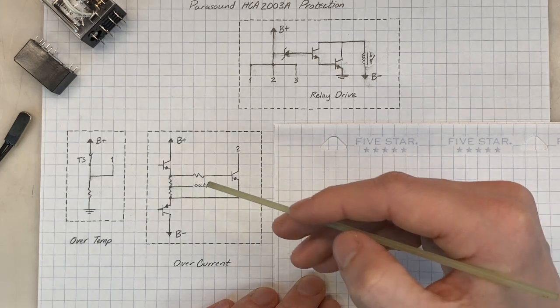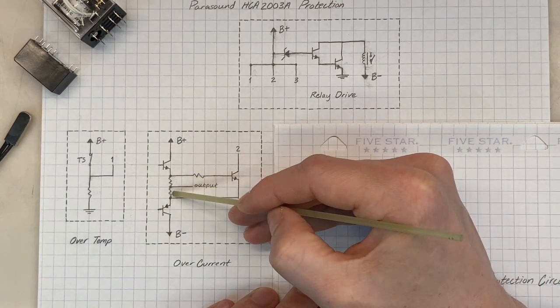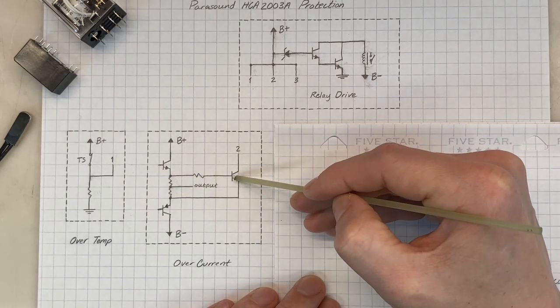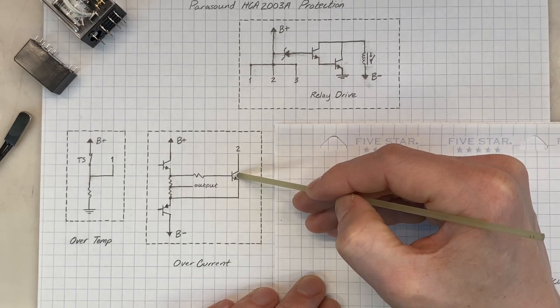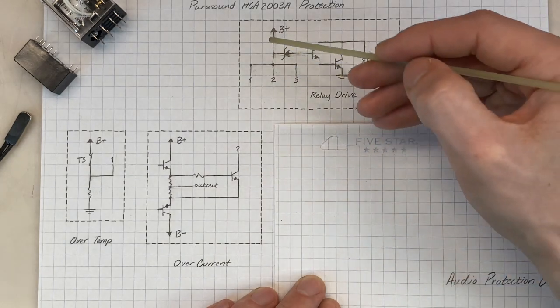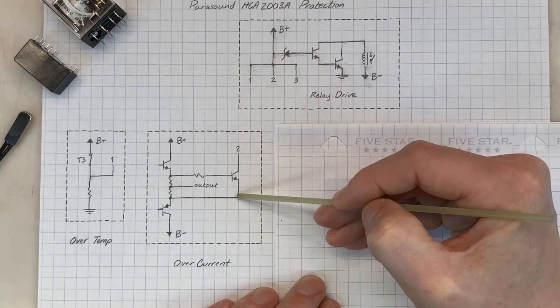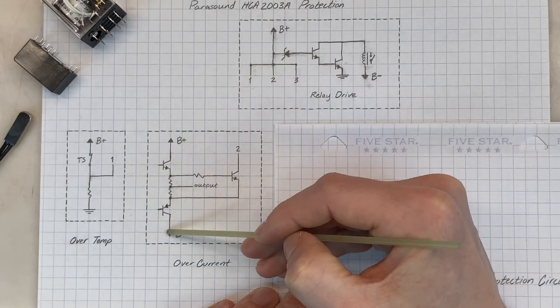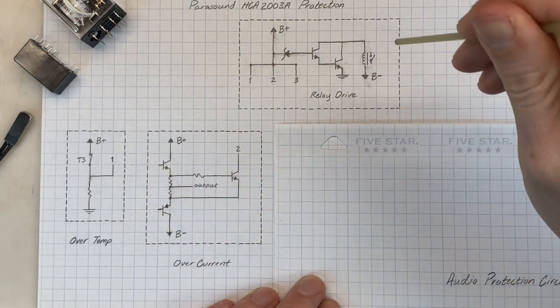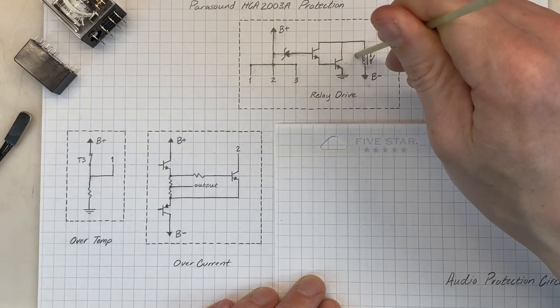But in a fault condition, when the current through these resistors is high enough, the voltage across this transistor will be high enough to turn it on. That will allow current to flow from B-plus through node 2, through this transistor, through this transistor, and finally to our negative supply rail, again bypassing the relay drive circuit.